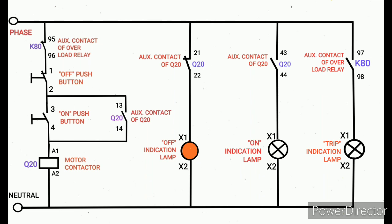This is the off indication lamp, because that auxiliary contact of Q20 21-22 is NC. The phase directly comes to this lamp. That will glow. Now I press the button. The motor contactor coil got supply, means that Q20 got pickup.